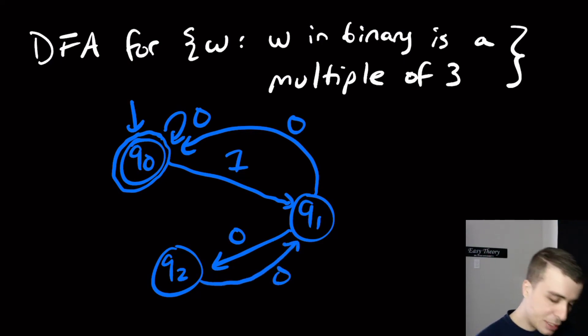And for analogous reasons, we can make sure that the 1 transition is going to self-loop on 2, because 2 times 2 plus 1 is 5, and then reduced by 3 will give us 2. So that's a quick DFA for all binary strings that are a multiple of 3.